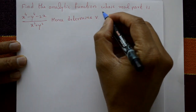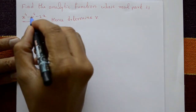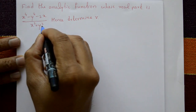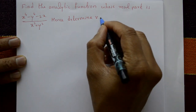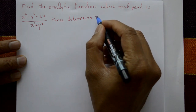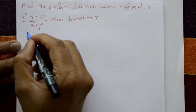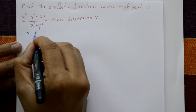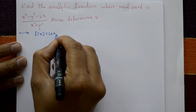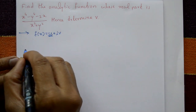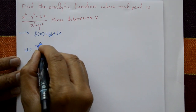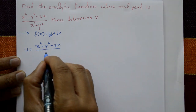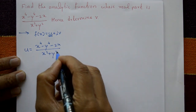Find the analytic function whose real part is (x⁴ - y⁴ - 2x) divided by (x² + y²). Hence, determine phi, which means also find the imaginary part. The real part means f(z) = u + iv, and u is given as (x⁴ - y⁴ - 2x) / (x² + y²).